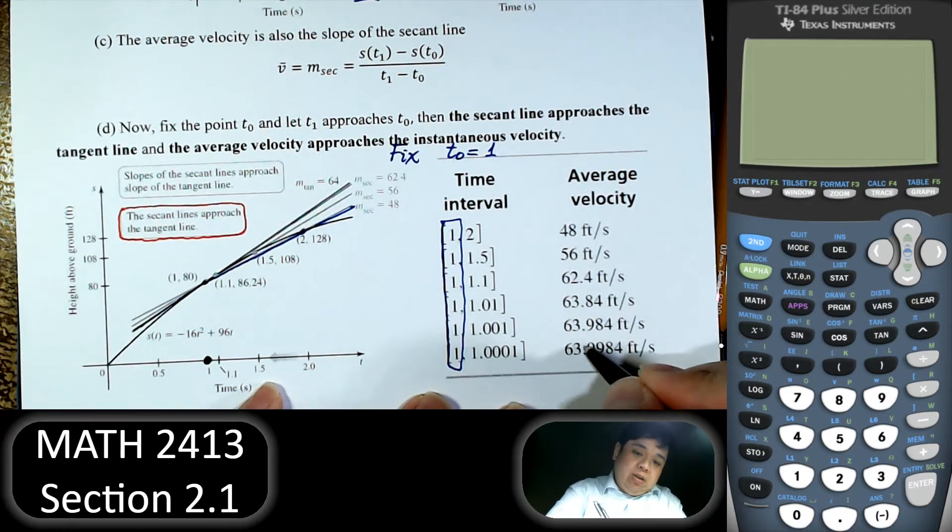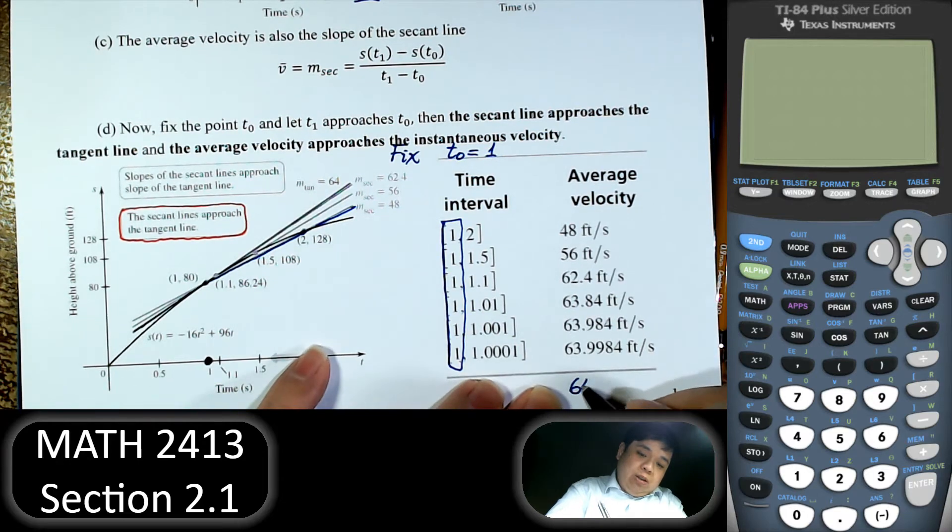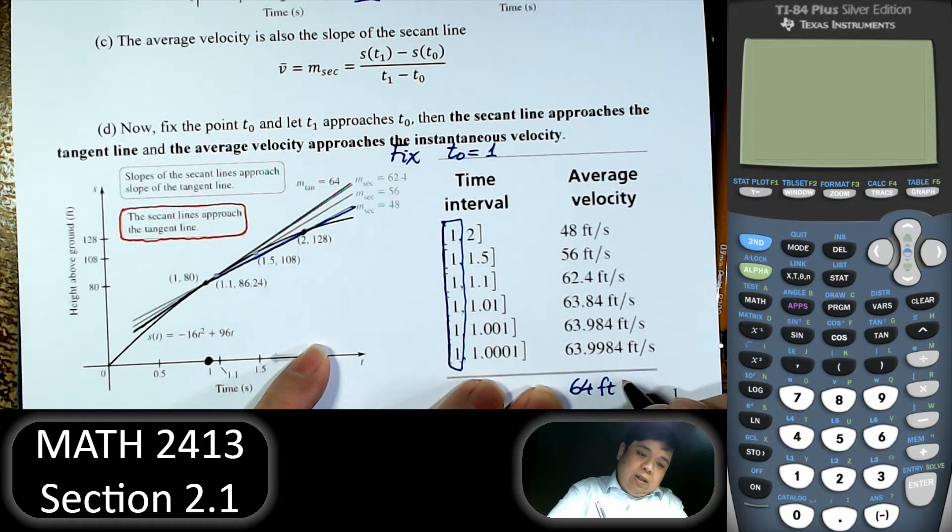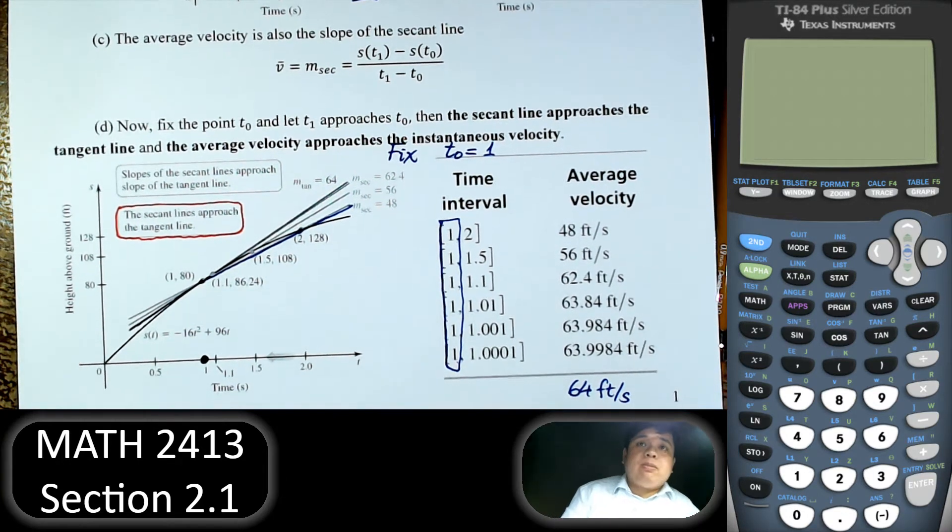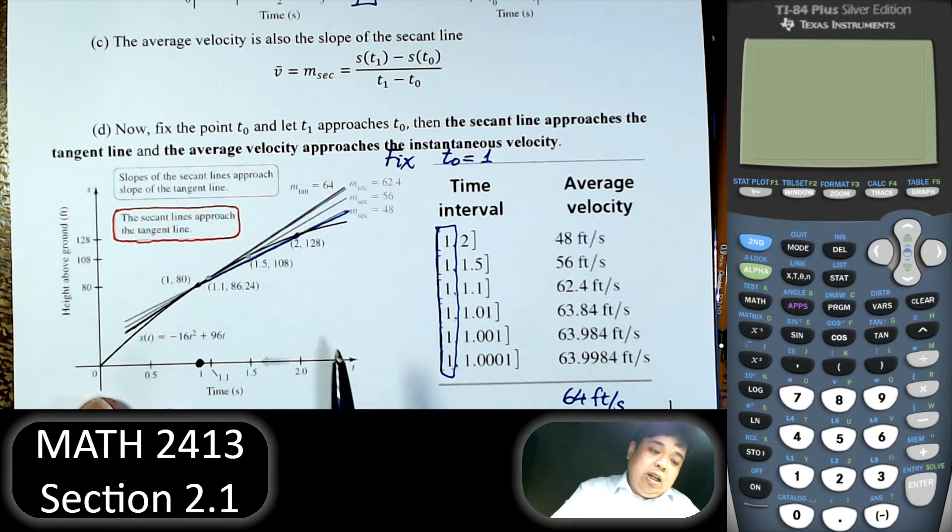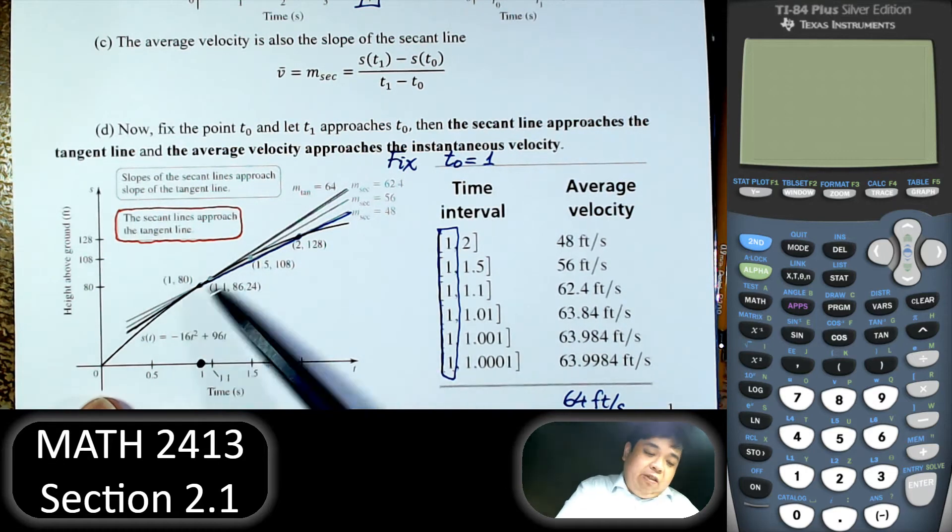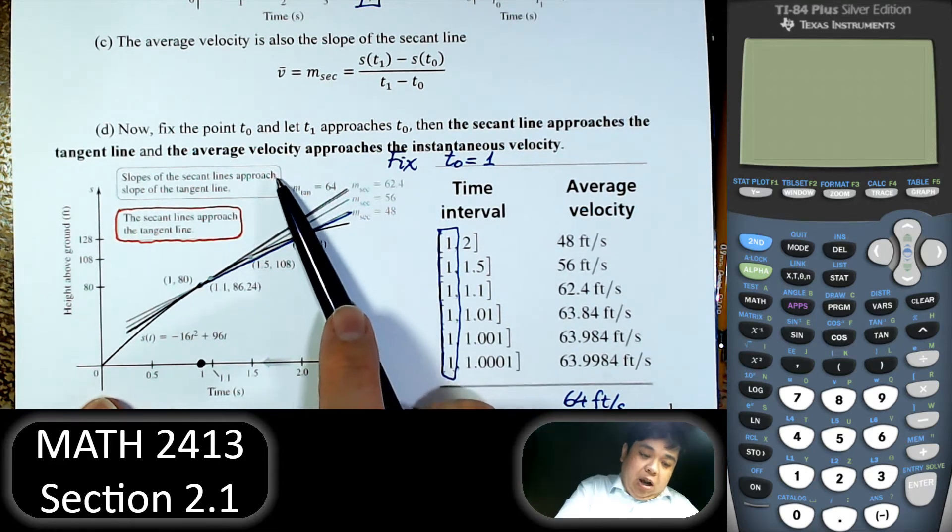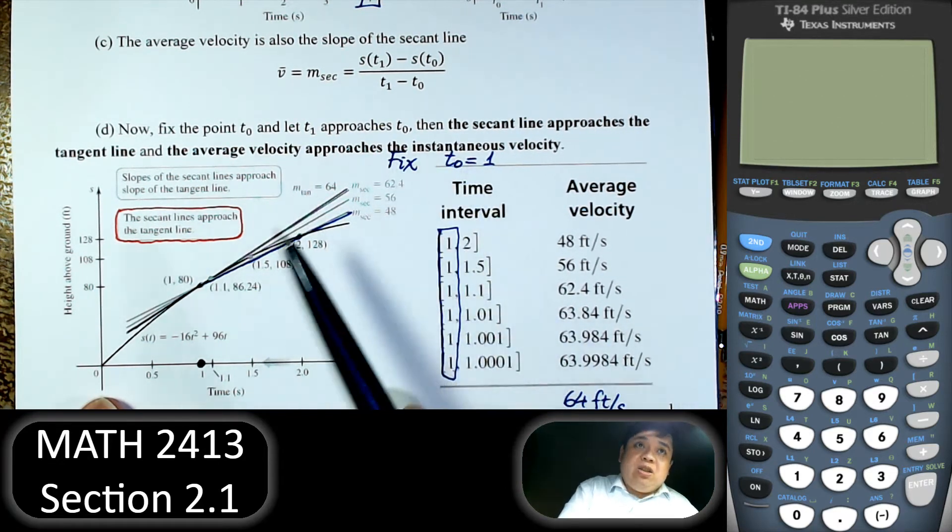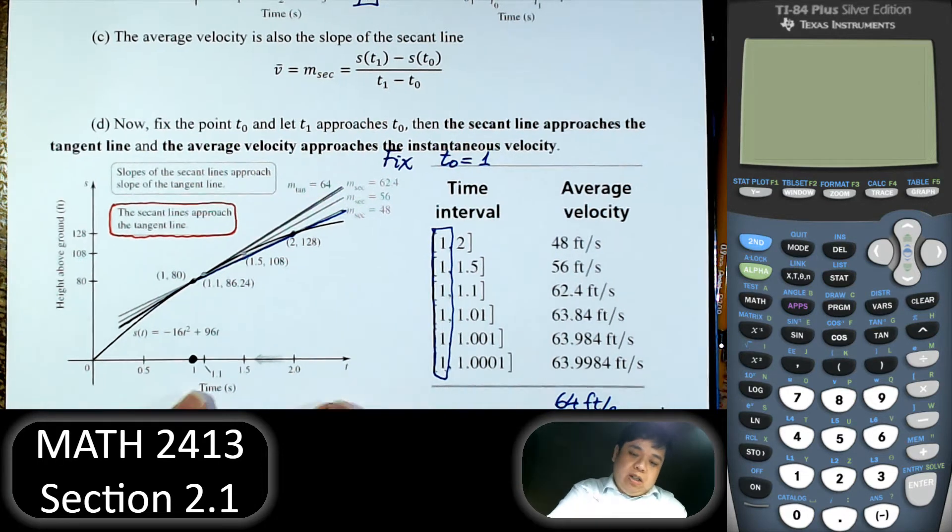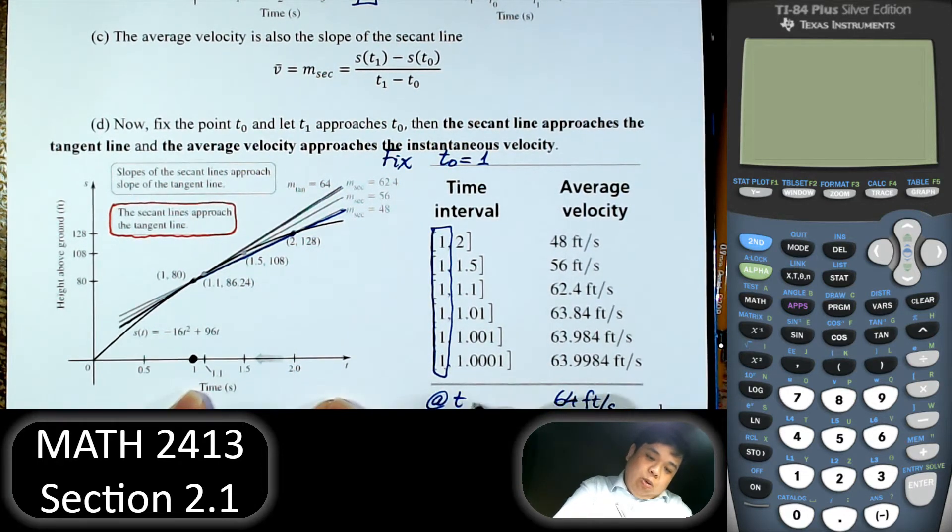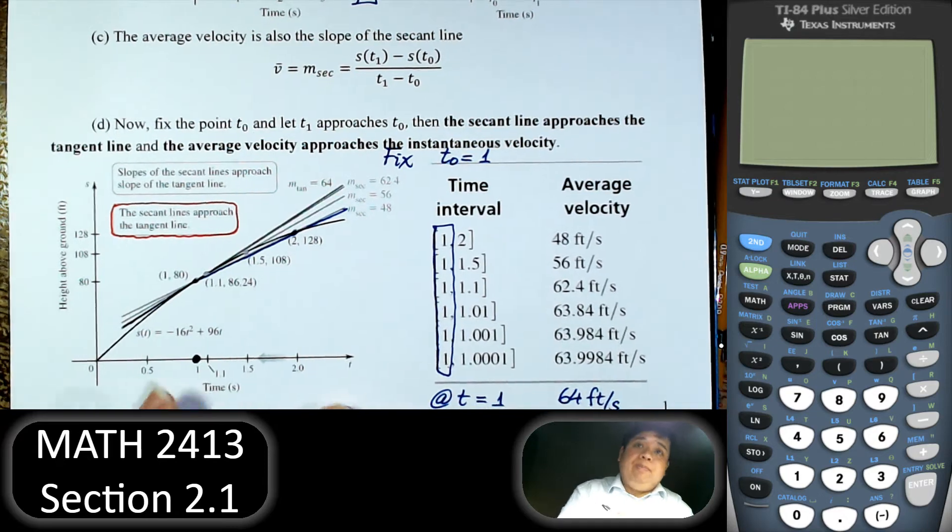So if this pattern continues, it looks like it will go to 64 feet per second. If that pattern continues, so that's what we said. The secant line approaches the tangent line, and the average velocity becomes the instantaneous velocity. So instantaneous velocity will be just at one point, t equal to 1.